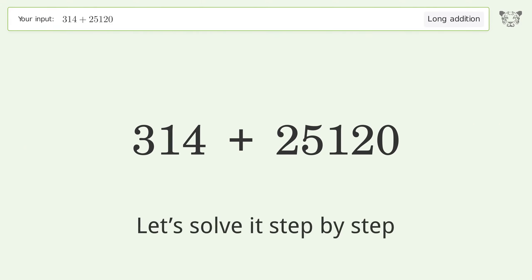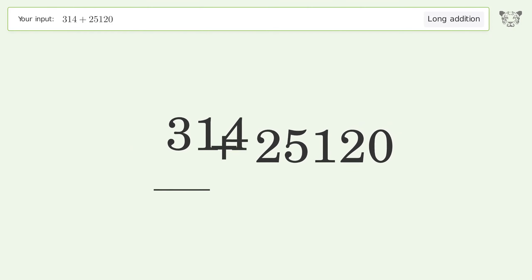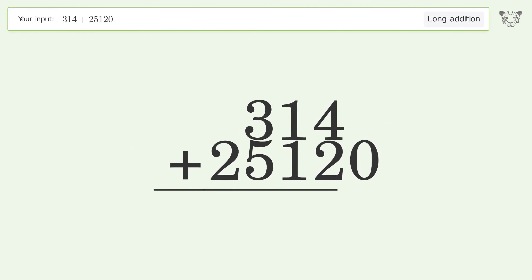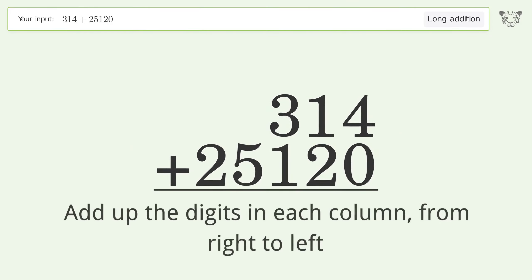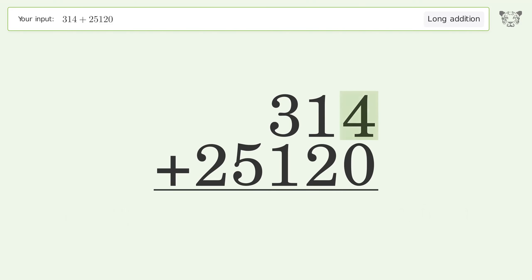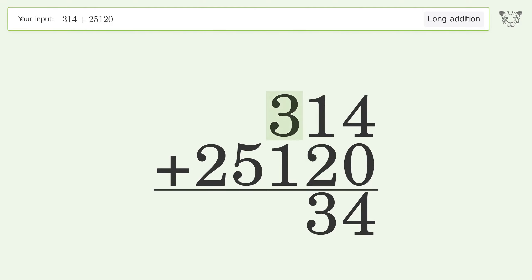Let's solve it step by step. Rewrite the numbers from top to bottom, aligned by their place values. Add up the digits in each column from right to left: 4 plus 0 equals 4, 1 plus 2 equals 3, 3 plus 1 equals 4.